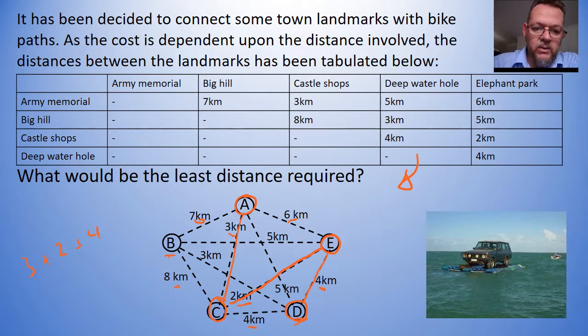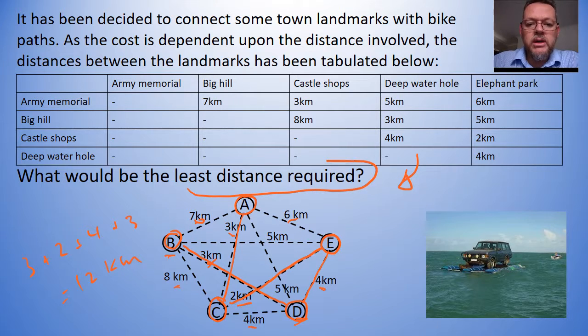And then last of all, we just need to connect B. Looking at this, we've got an 8, we've got a 3, we've got a 7. So this 3 is going to be the shortest. So then we can connect this up like so. And that's 3 kilometers. So I have 3 and 2 is 5 plus 4 is 9 plus another 3. And that's going to equal 12 kilometers. So the least distance required to connect all of these towns up with a bike path using a minimal spanning tree is 12 kilometers.